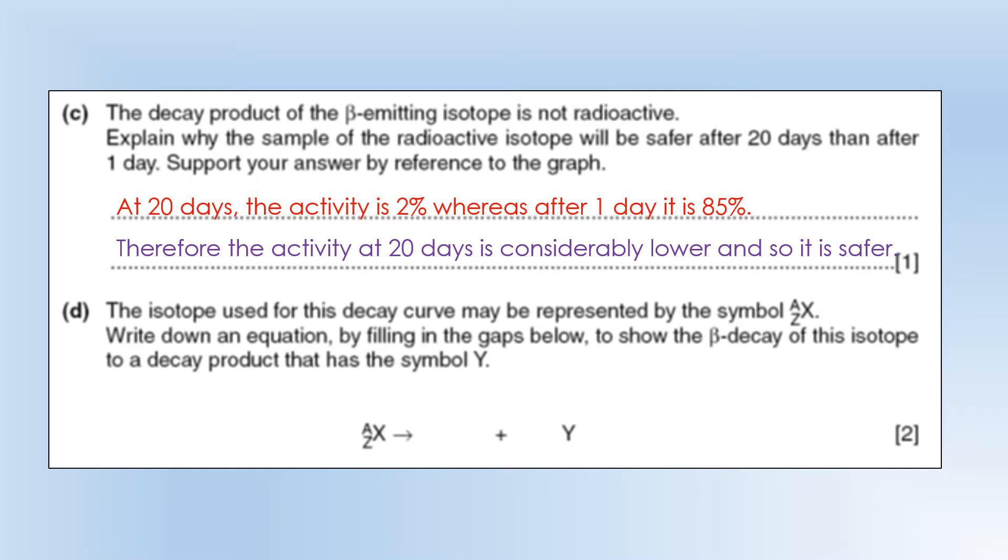So the activity at 20 days is considerably lower, which means it's going to be safer, because there are fewer decays every second. And the fewer decays, the lower the risk is going to be.